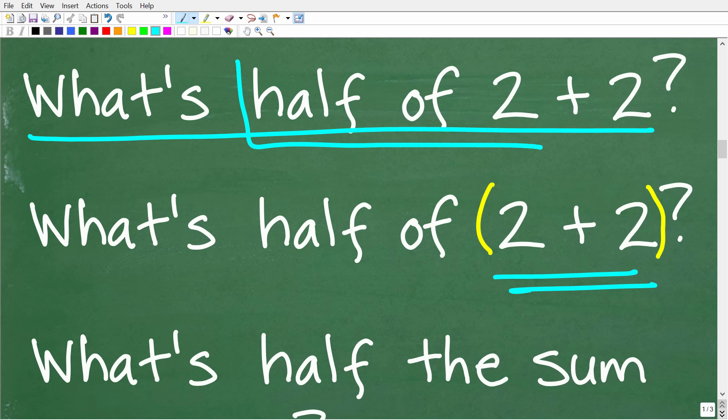Because half of 2, this right here, is multiplication, right? So what's half of 2? To find half of 2 is 1 half times 2. This operation is multiplication. This operation is addition. You always do multiplication before addition unless the 2 plus 2 right here, this sum, is in parentheses, okay?